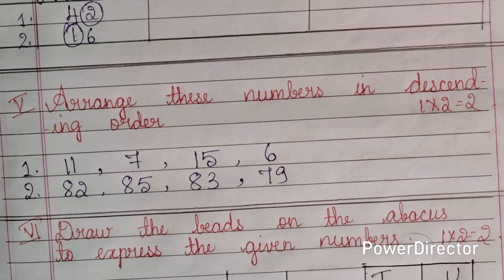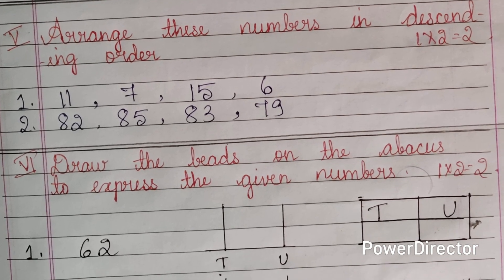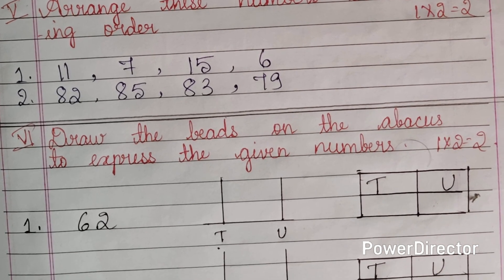Next fifth main, arrange these numbers in descending order, two questions are there, each question carry two marks. Descending order means from bigger to smaller.